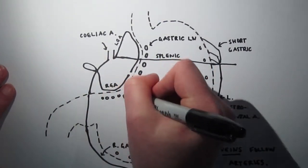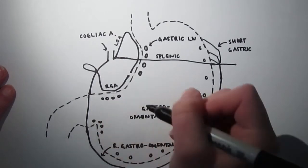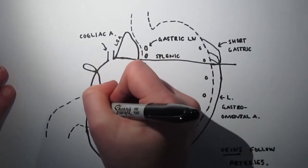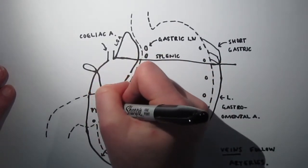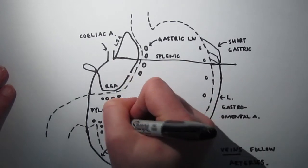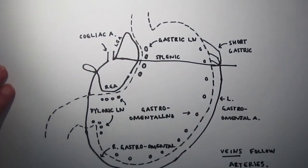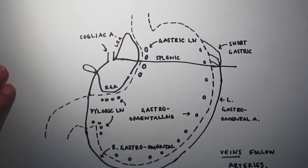The innervation of the stomach is both parasympathetic and sympathetic, with the parasympathetic being the anterior and posterior vagal trunks, and the sympathetic being the splenic nerves.